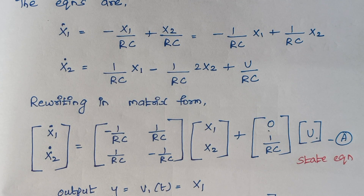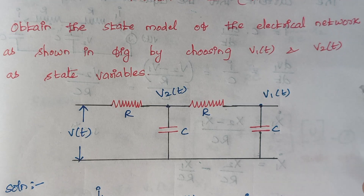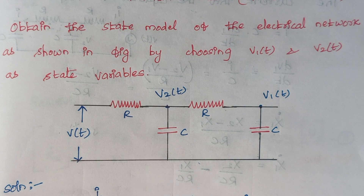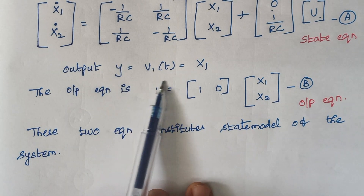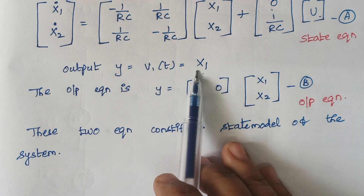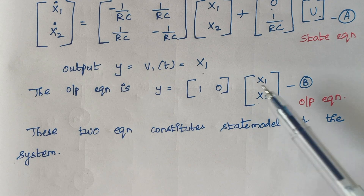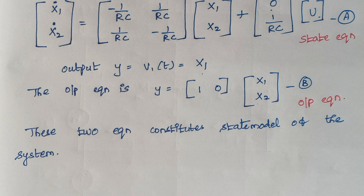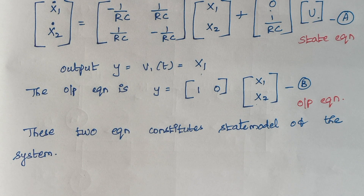Now we frame the output equation. The output voltage is V1(t), which is x1. So Y = [1, 0] · [x1, x2]ᵀ — coefficient of x1 is 1 and there is no x2 term. This is the output equation. Together, the state equation and output equation constitute the state model of the system. In both methods of solving, the final answer remains the same — choose whichever suits you best. Hope you understand the concept well; let me know any doubts in the comment section. Thank you.